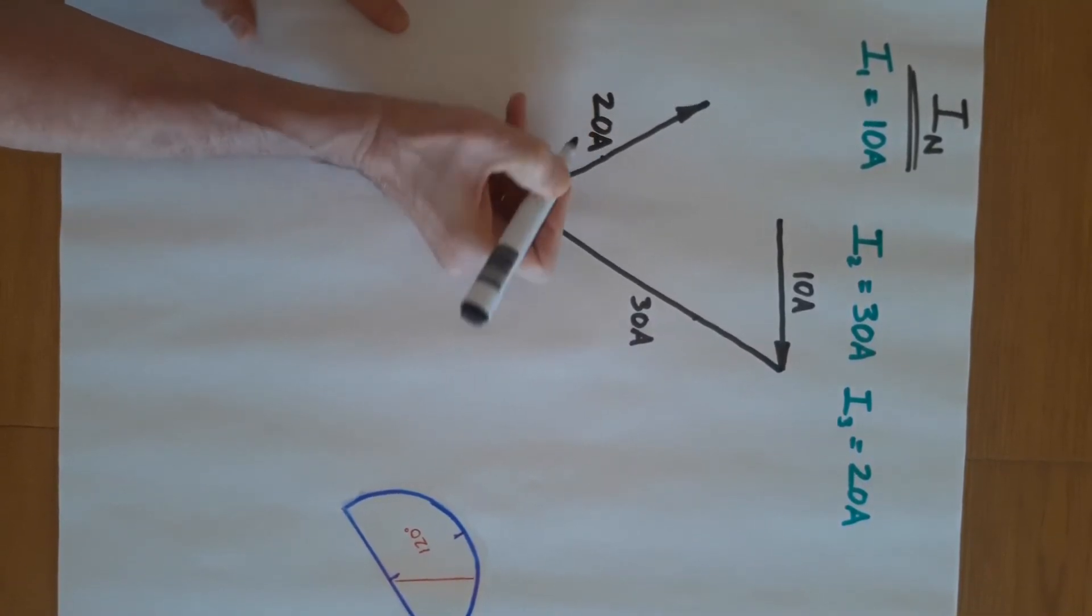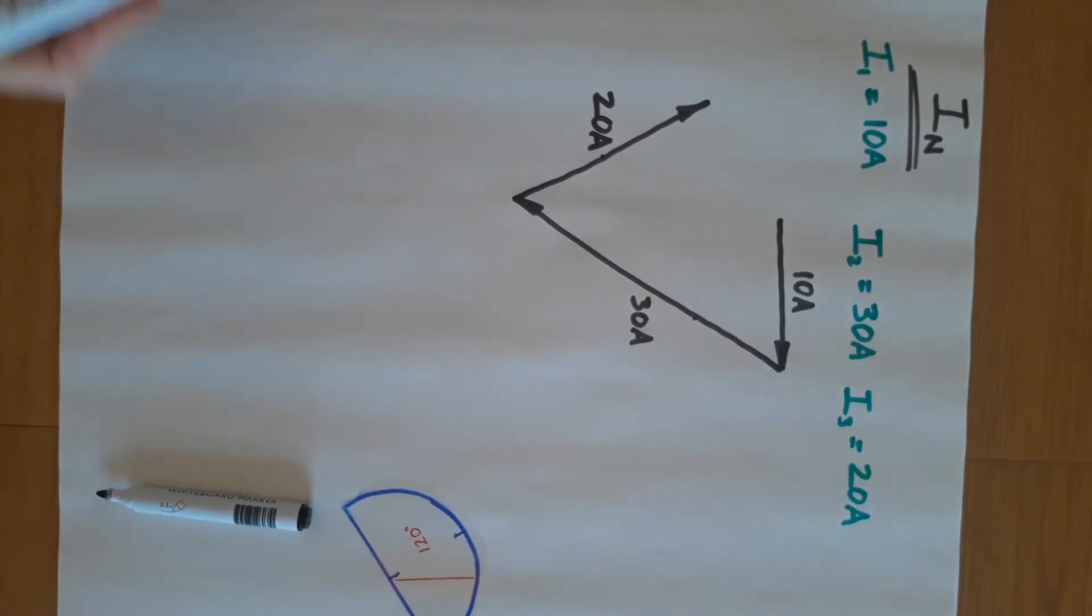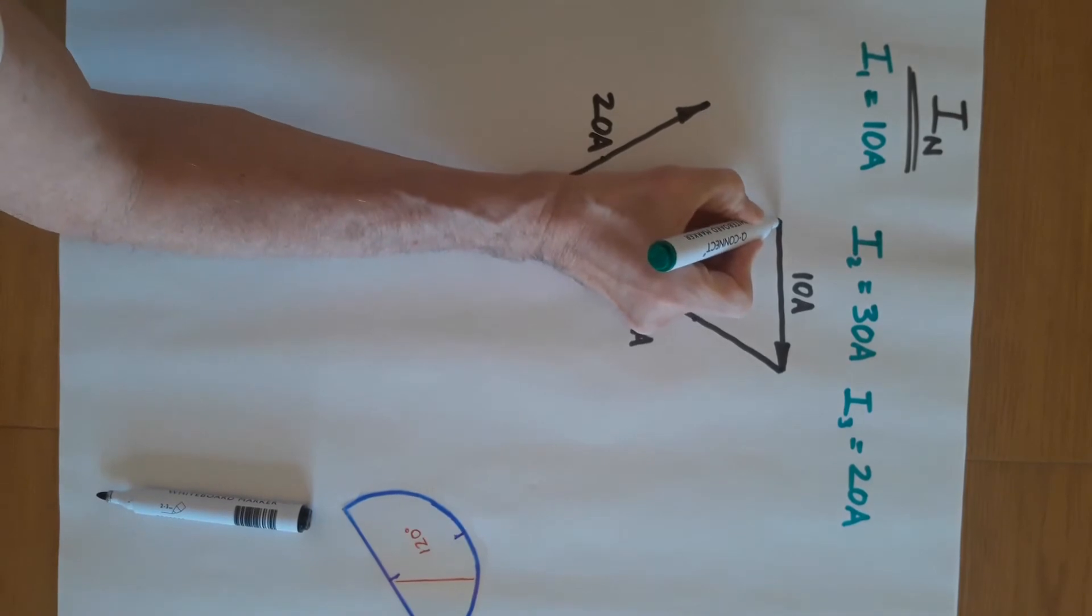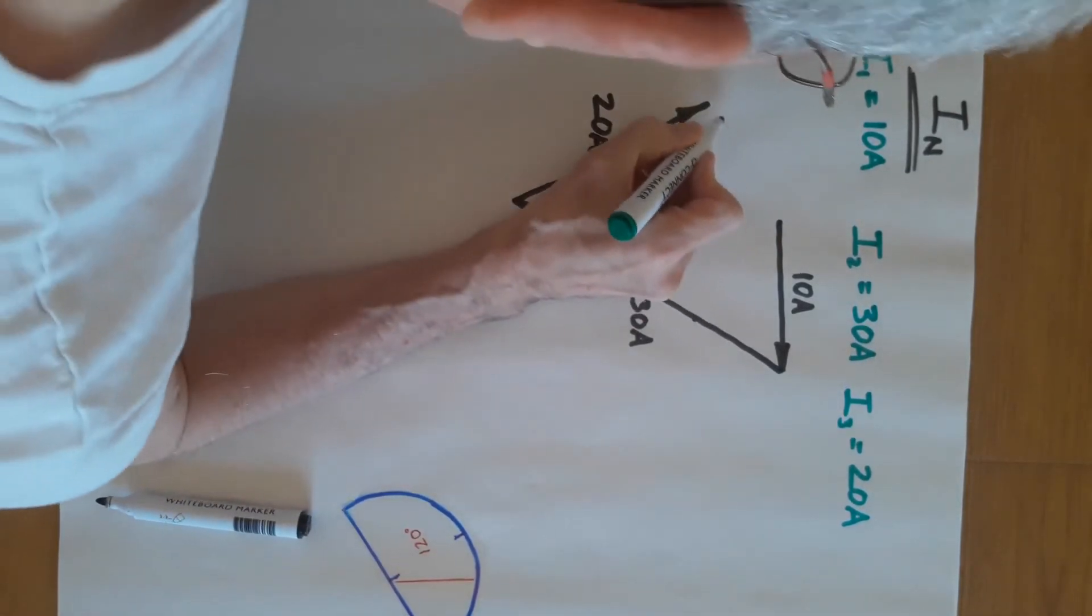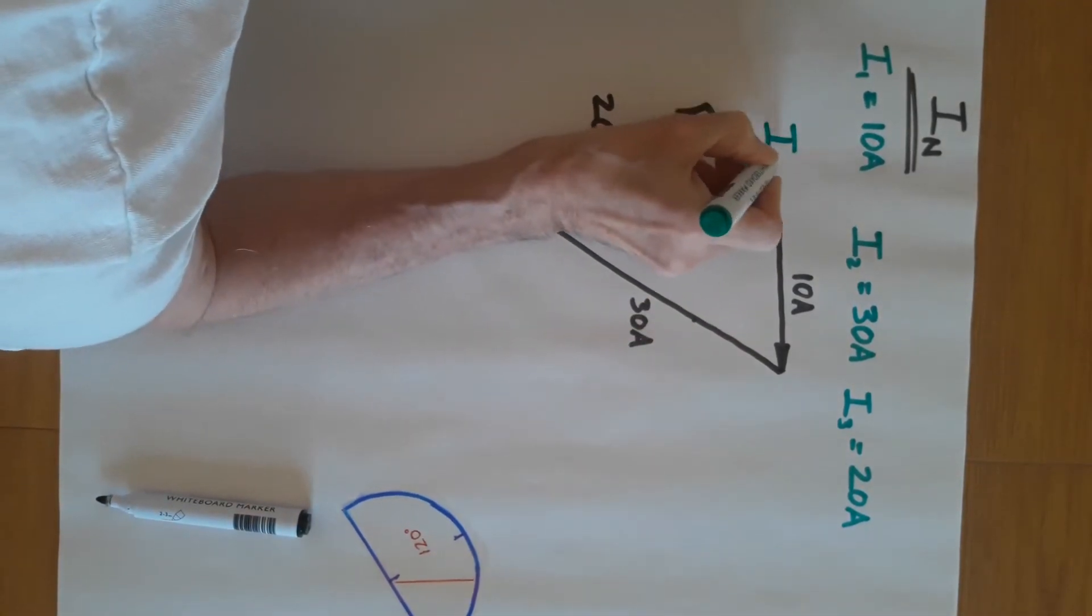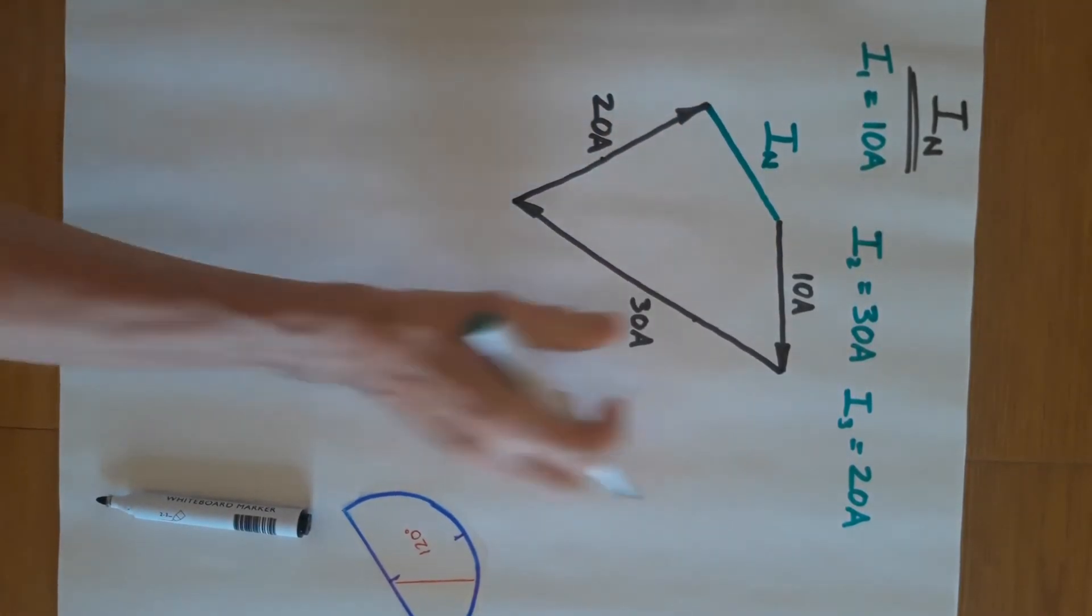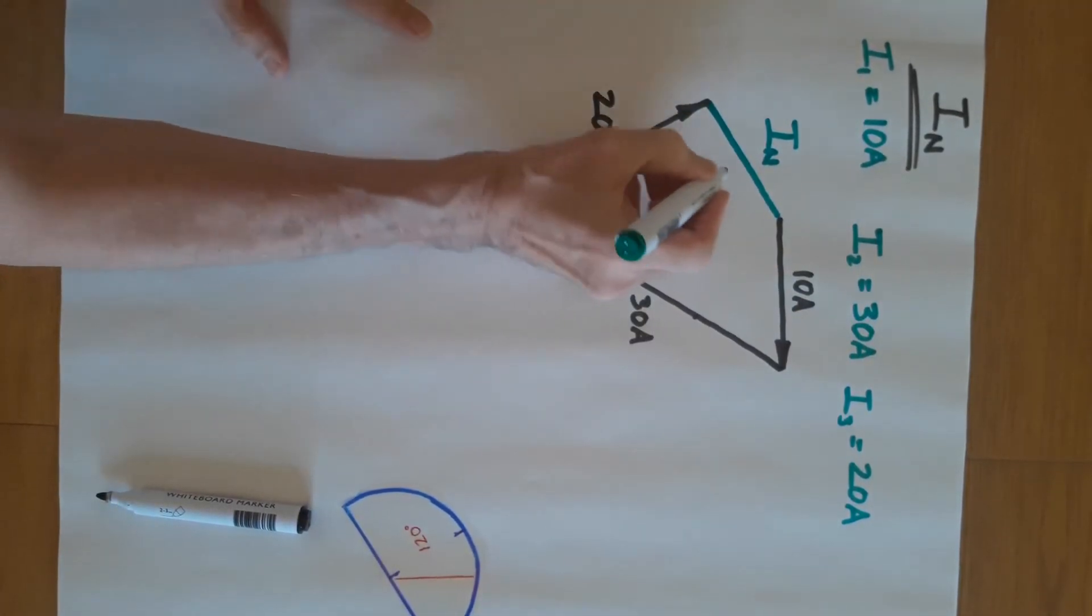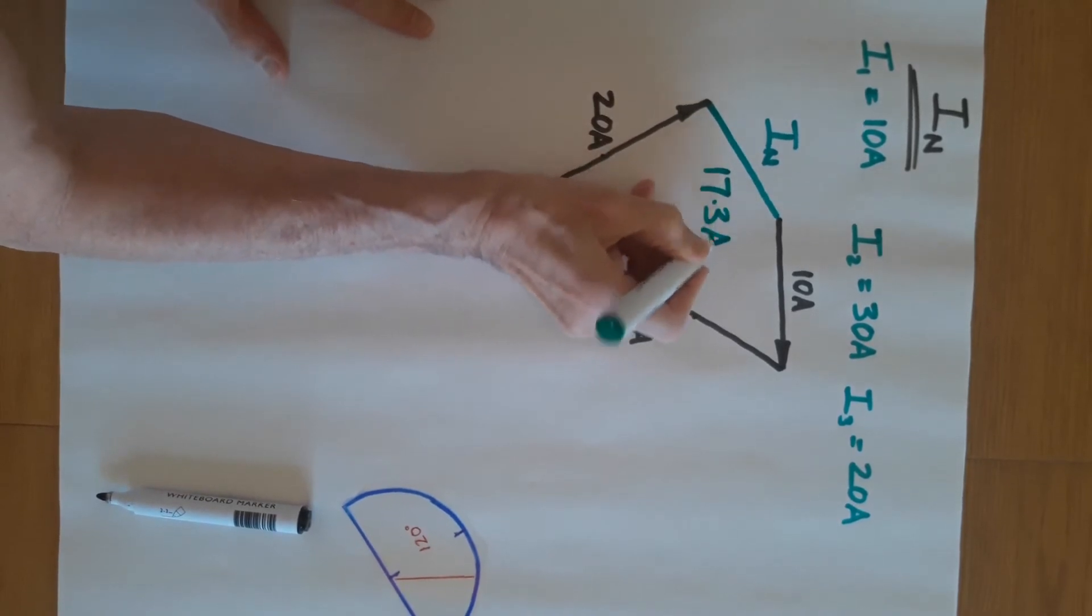And the whole purpose of this diagram is the difference from where you started to where you finished is your neutral current. So this is I_n, the neutral current. And you measure it, and if you've done this accurately, you should come up with 17.3 amps.